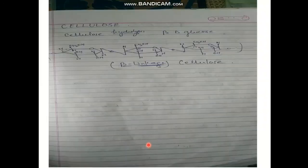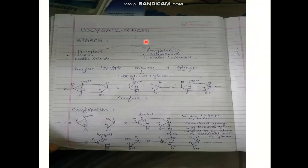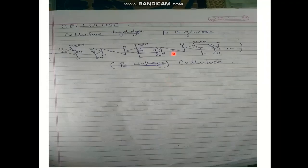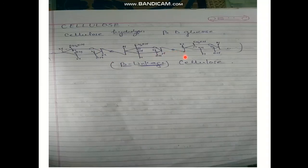The second polysaccharide is cellulose. Cellulose on hydrolysis gives beta-D-glucose. The key difference between starch and cellulose is that starch consists of alpha-D-glucose units whereas cellulose consists of beta-D-glucose units. In cellulose, a beta glycosidic linkage forms between C1 and C4 of the glucose units. At C1 the OH is on the upper side (beta), and at C4 the OH is always on the lower side in glucose. These beta-D-glucose units combine to give the large molecule cellulose.